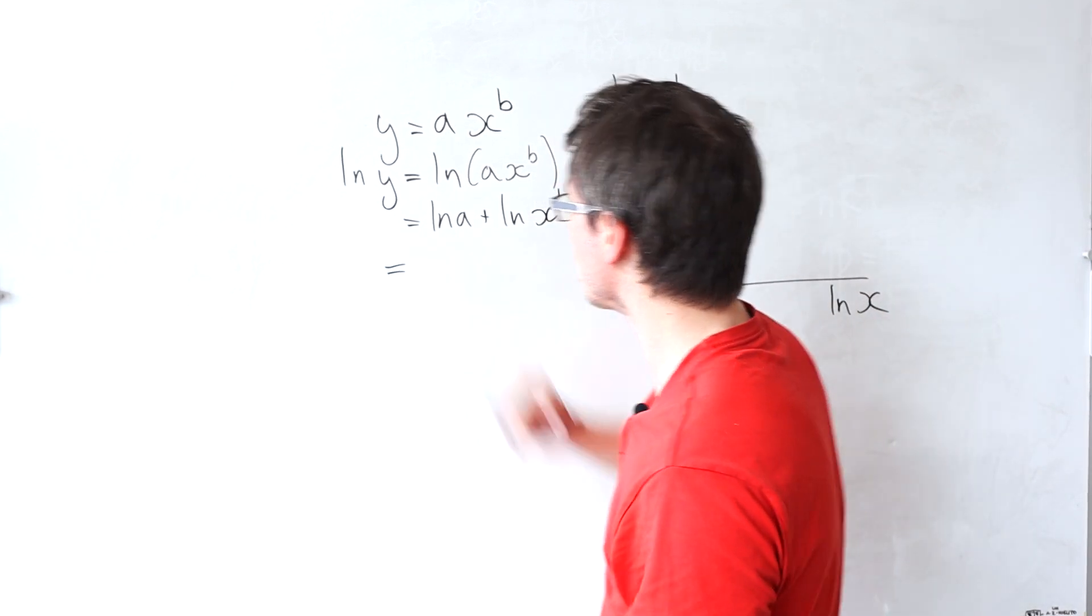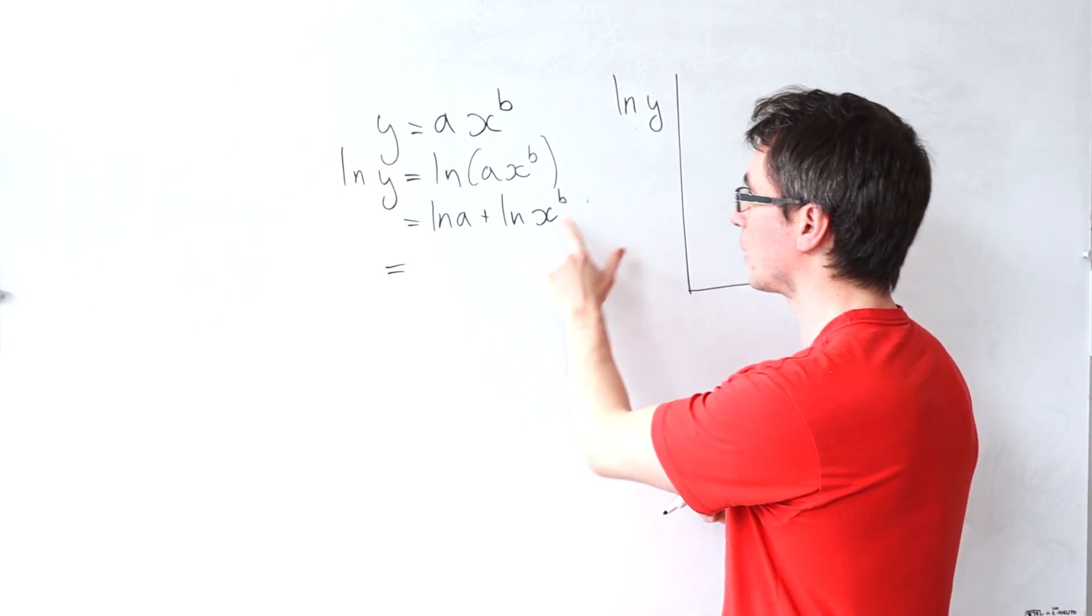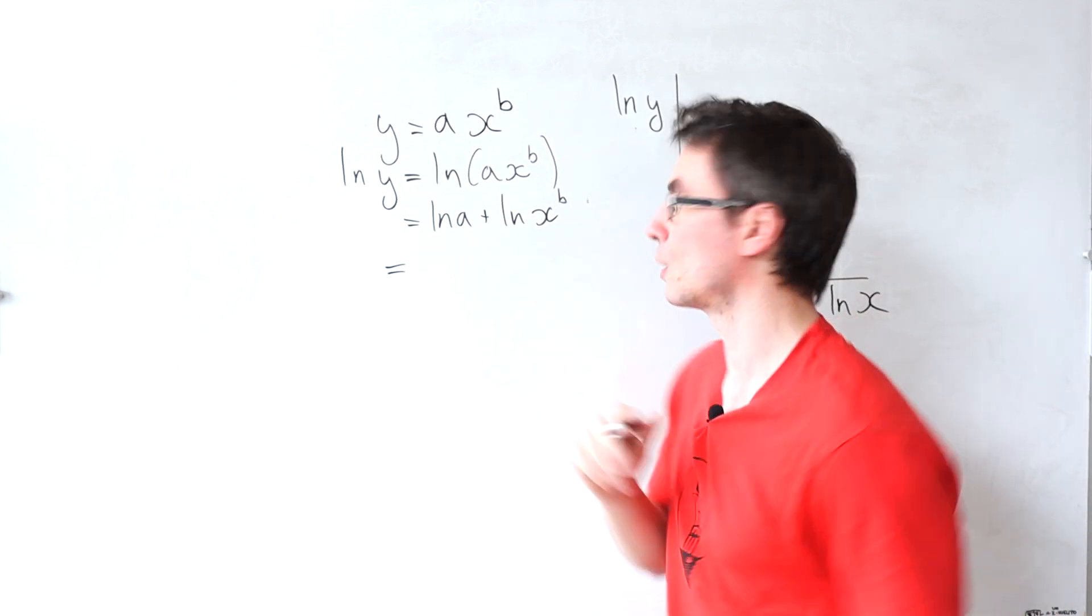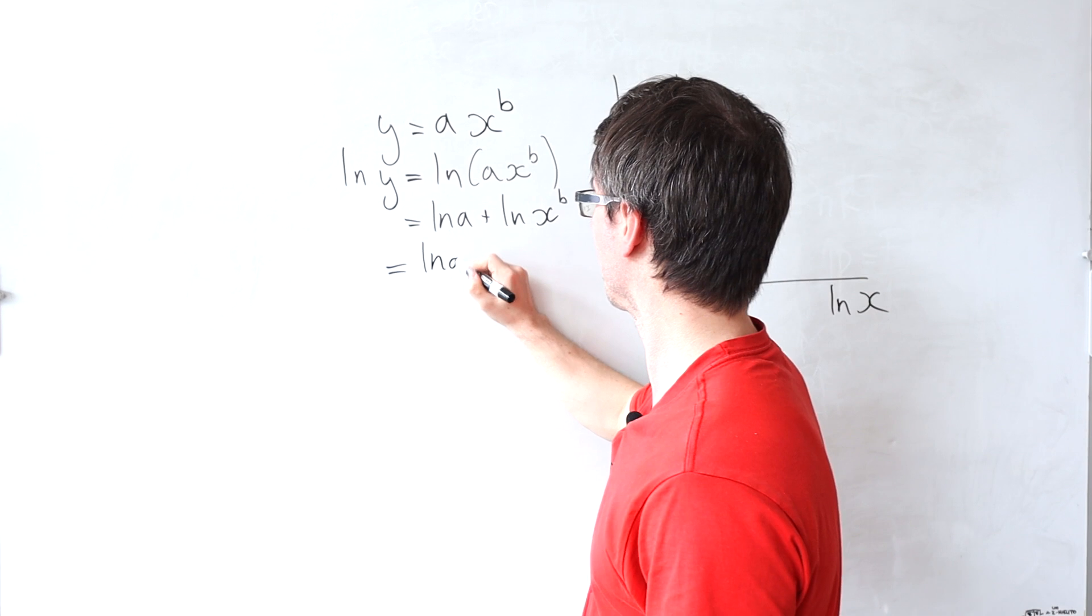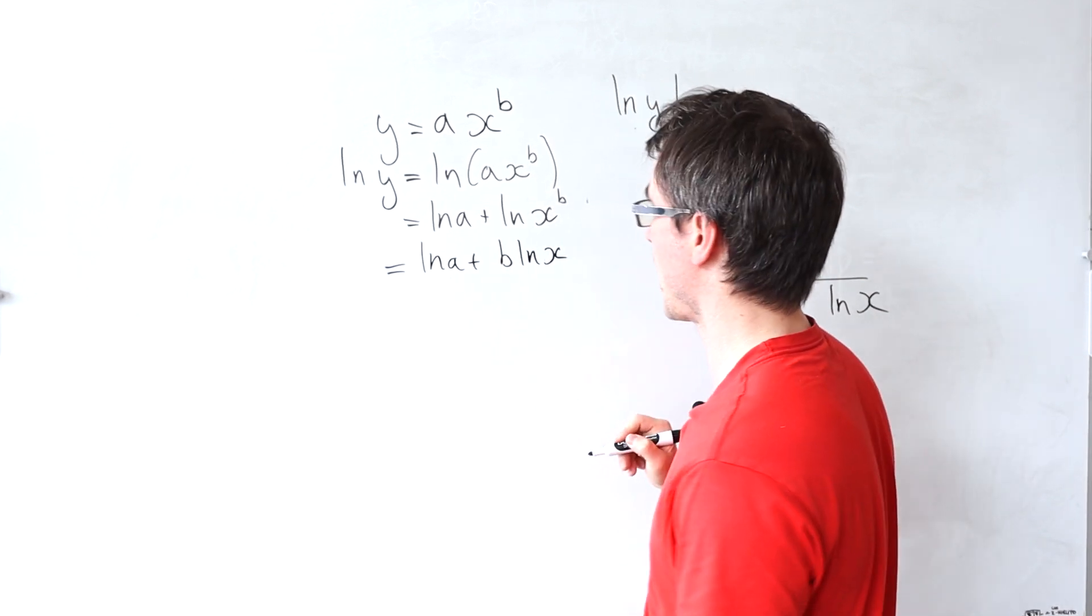Then I'm going to use yet another logarithm law: if I have something raised to a power, the power comes out in front of the logarithm. So I get ln of a plus b ln of x.